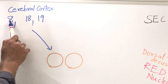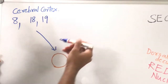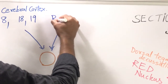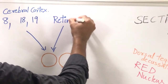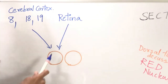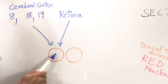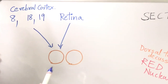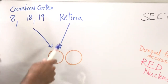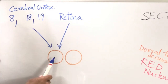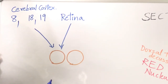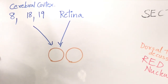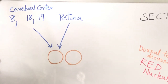The second afferent connection is retinotectal fibers. The superior colliculus receives information from the retina via optic nerve, optic chiasm, and optic tract. Before the fibers reach the lateral geniculate body, some fibers from the optic tract enter the superior colliculus via the superior brachium. These retinotectal fibers carry contralateral homonymous visual field information.